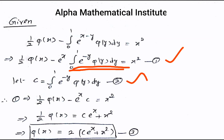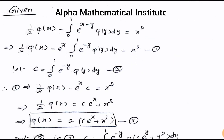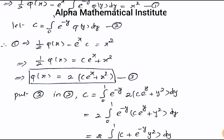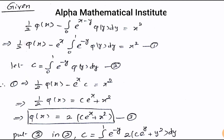Let c equal the integral from 0 to 1 of e^(−y) · φ(y) dy. Substituting this c value into the first equation gives (1/2)φ(x) minus c·e^x equals x², which can be rewritten as (1/2)φ(x) equals c·e^x plus x². Therefore φ(x) = 2(c·e^x + x²). Call this equation number 3.